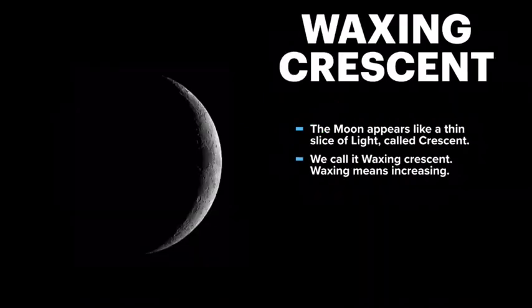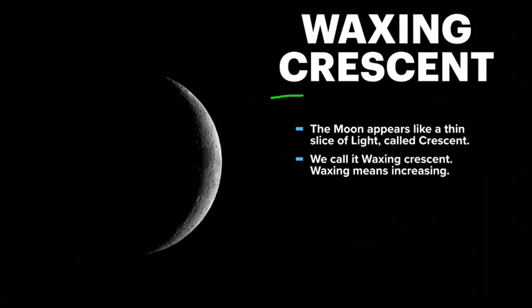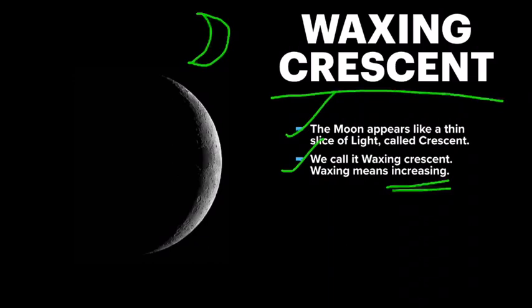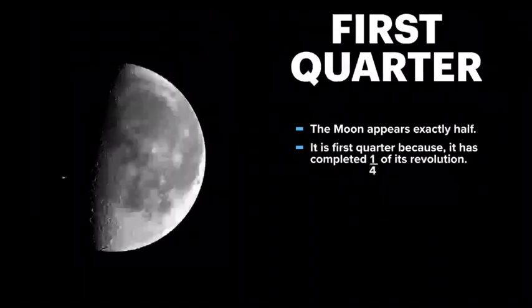Next, the moon starts to grow bigger. This is called the waxing crescent. The moon appears as a thin slice of light called a crescent. It is called waxing crescent because waxing means increasing — from a new moon which is completely dark, it is starting to grow and increase in size.